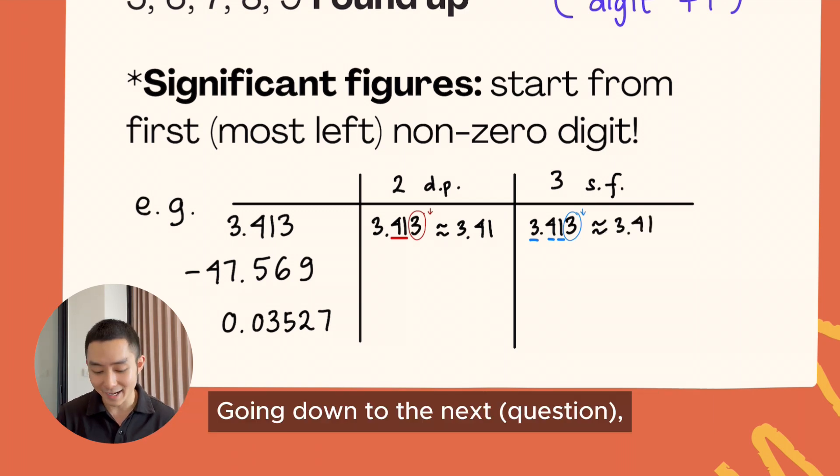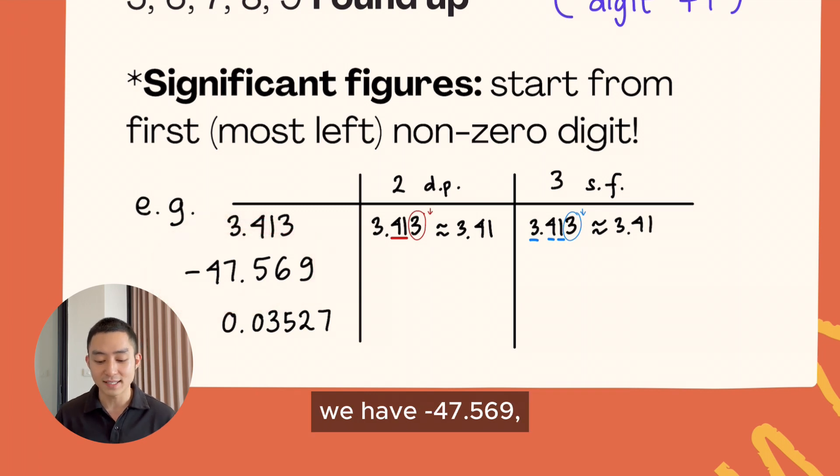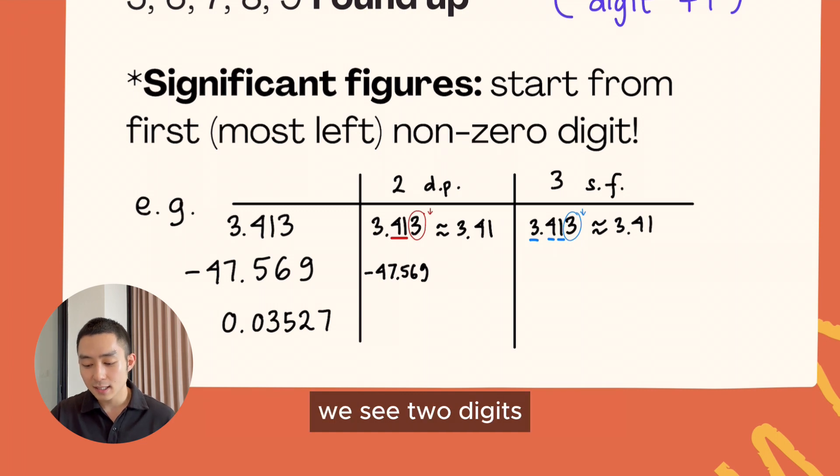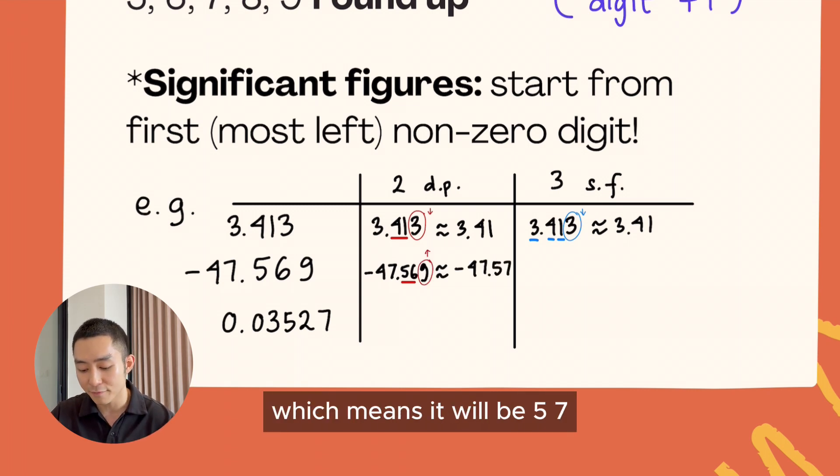Going to the next, we have -47.569. To round that to two decimal places, we see two digits after the decimal, so it's 5 and 6. After that, it's 9, so it goes up, which means it will be -47.57.